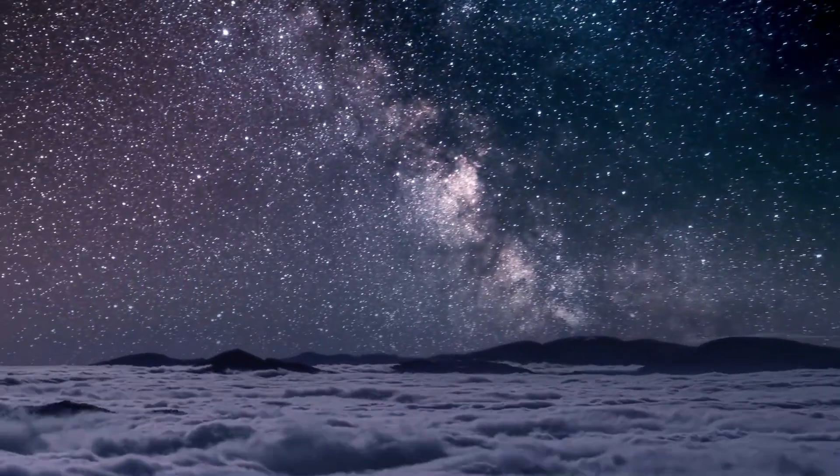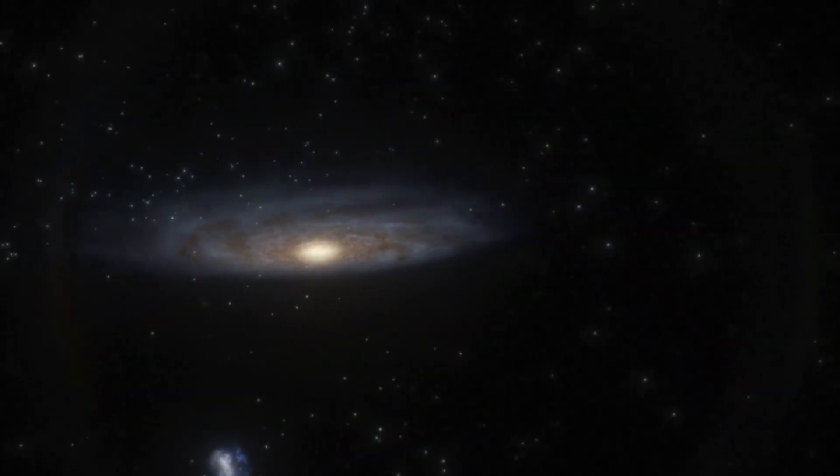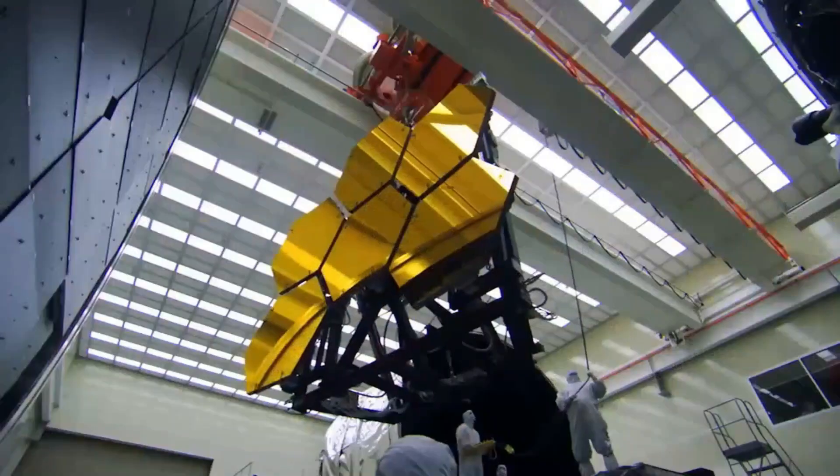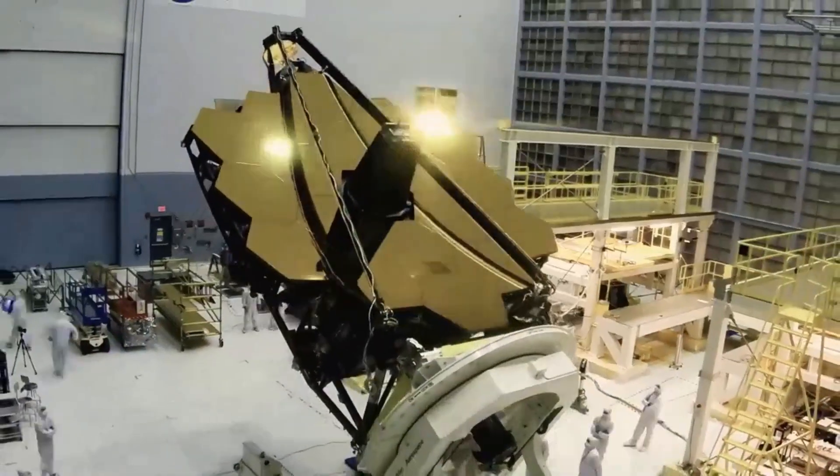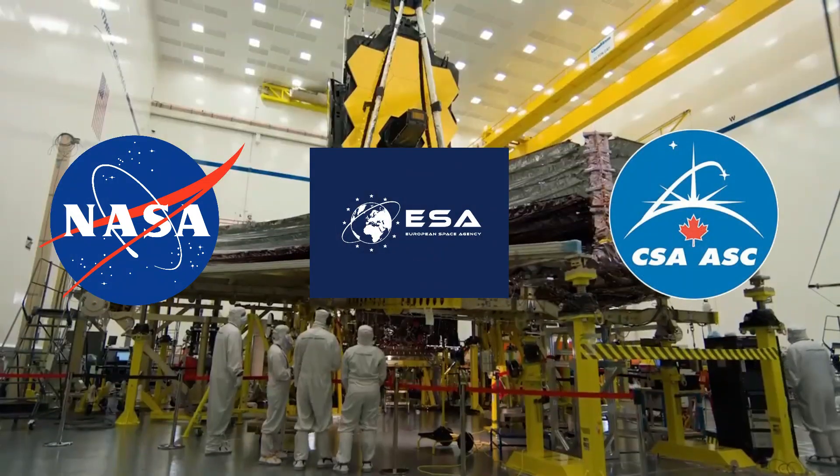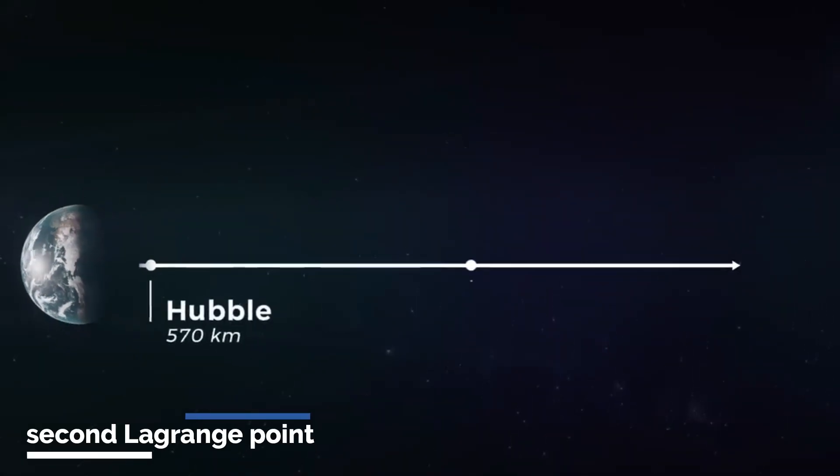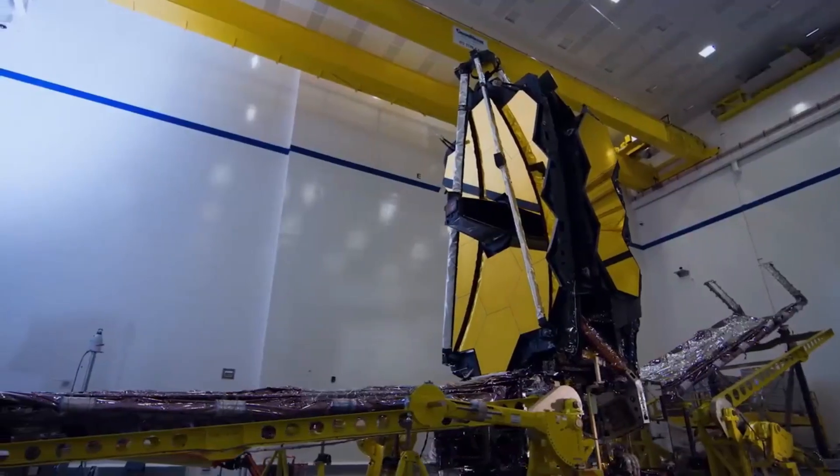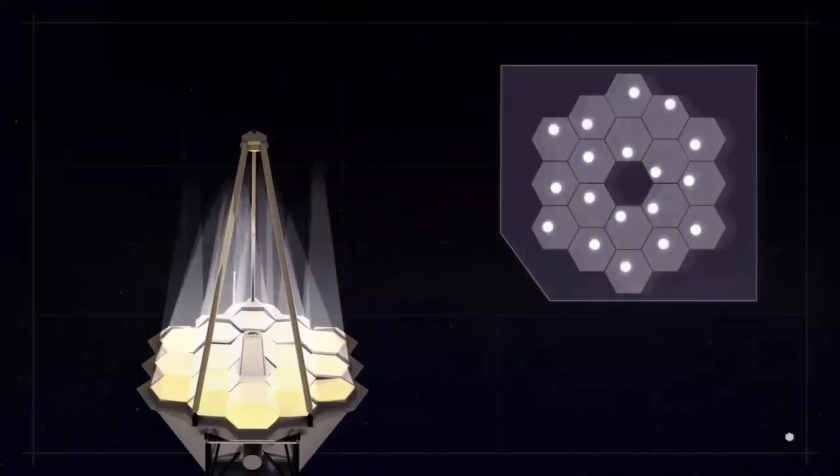Embarked upon in December 2021, the James Webb Space Telescope represents the pinnacle of technological advancement in space telescopes. Developed through a collaborative effort involving NASA, the European Space Agency, and the Canadian Space Agency, the James Webb Telescope is positioned at the second Lagrange point approximately 1.5 million kilometers from Earth. Equipped with state-of-the-art instruments tailored to capture high-resolution images and spectra within the infrared spectrum, the telescope represents a significant advancement in space observation technology.